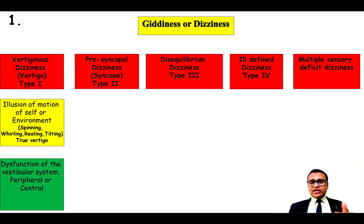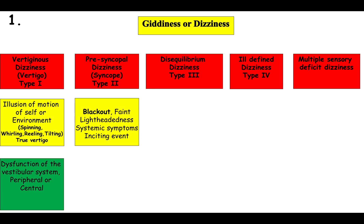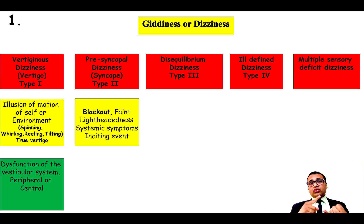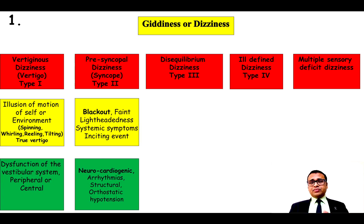Coming to the next type — presyncopal dizziness or Type 2 dizziness. In this type, the patient feels blackout, faintness, or lightheadedness. Presyncopal dizziness can lead to actual loss of consciousness called syncope. There are associated systemic symptoms like diaphoresis — that is sweating — and cold clammy extremities. Usually there is an inciting event like prolonged standing or micturition, or an inciting agent in the form of sudden fear, severe pain, or sight of blood. The most common cause is neurocardiogenic syncope.